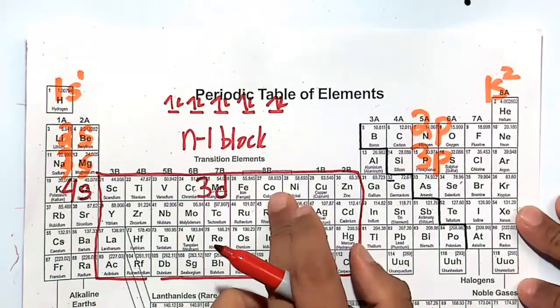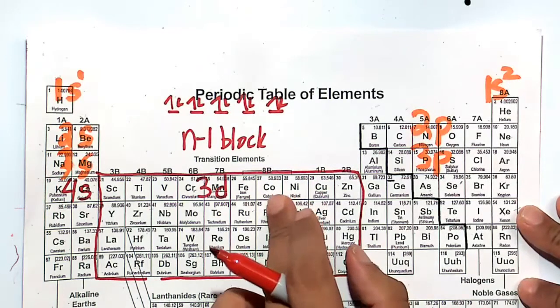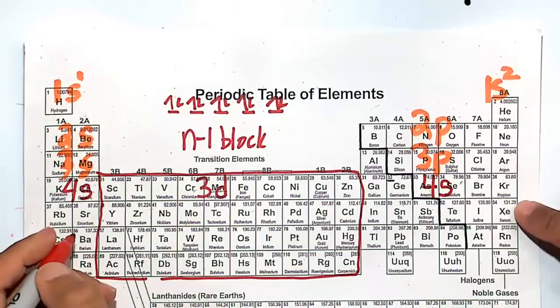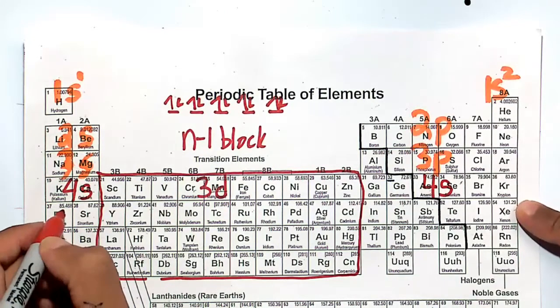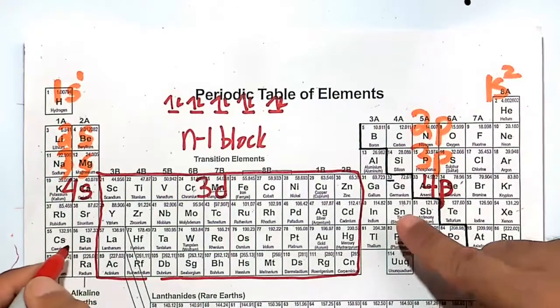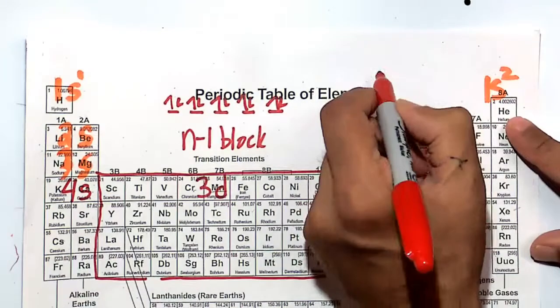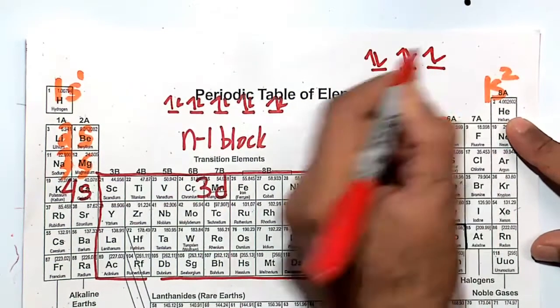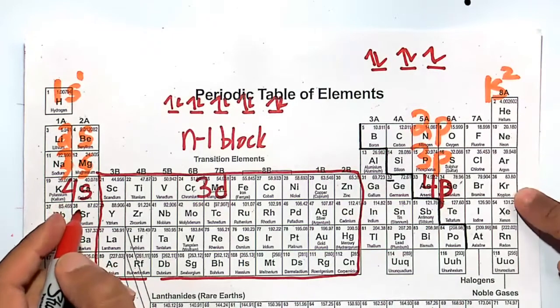After we fill the 3d orbital, we now go to 4p. After we fill electron 36, electrons 37 and 38 are going to fill 4p. Remember the p orbital: spin up, spin up, spin up, and then down, down, down.